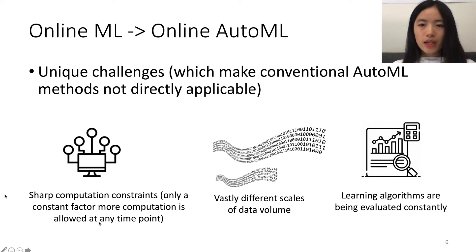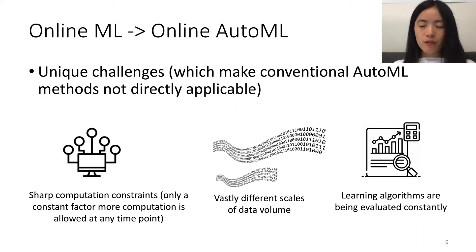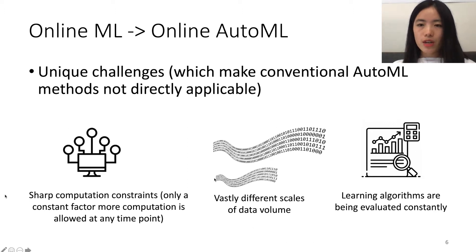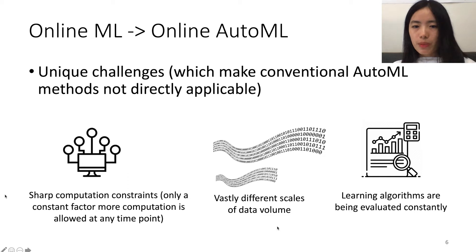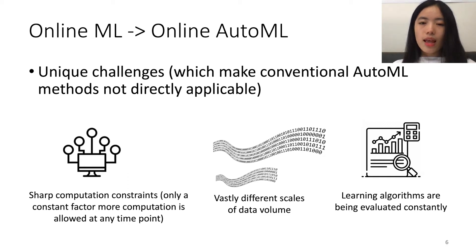Firstly, in a practical online learning setting, there is usually a sharp computation constraint that any algorithm needs to respect. This sharp computation constraint is usually ignored in conventional AutoML methods. Secondly, any functioning online system needs to be able to handle vastly different scales of data volume, which makes it non-trivial to decide how many data samples to spend on a model with a particular hyperparameter.